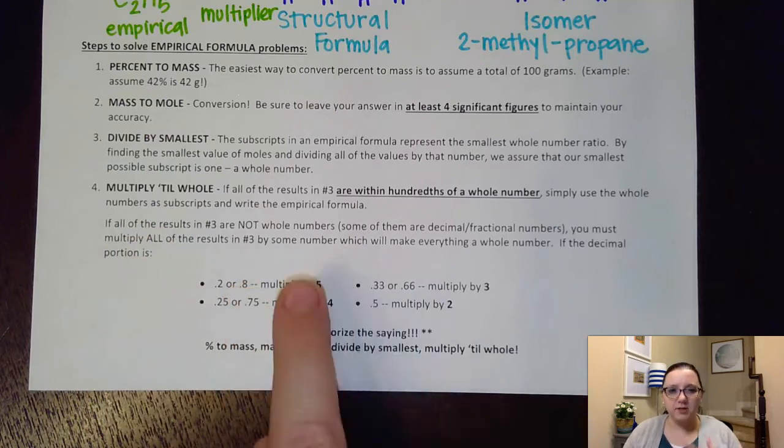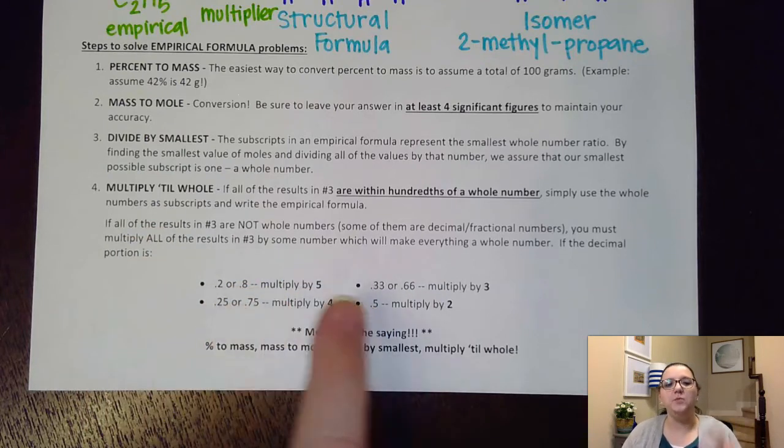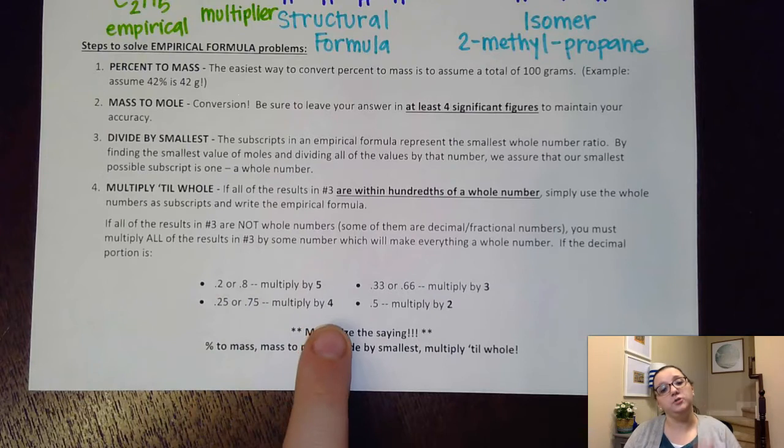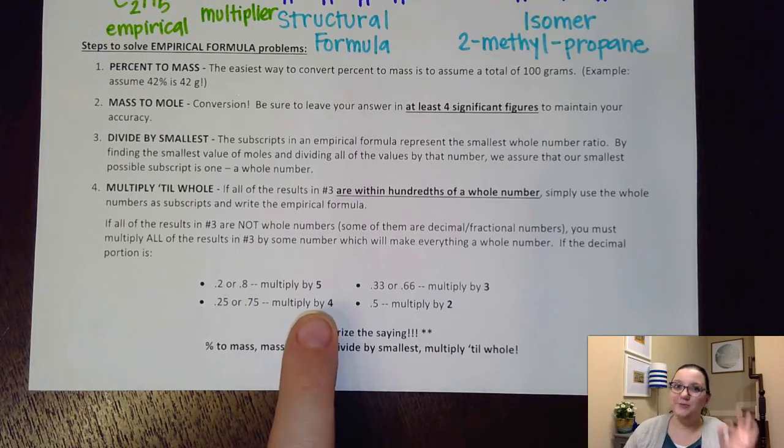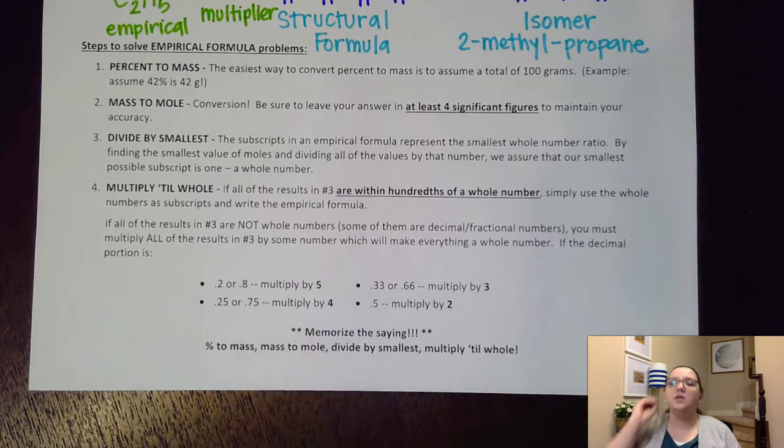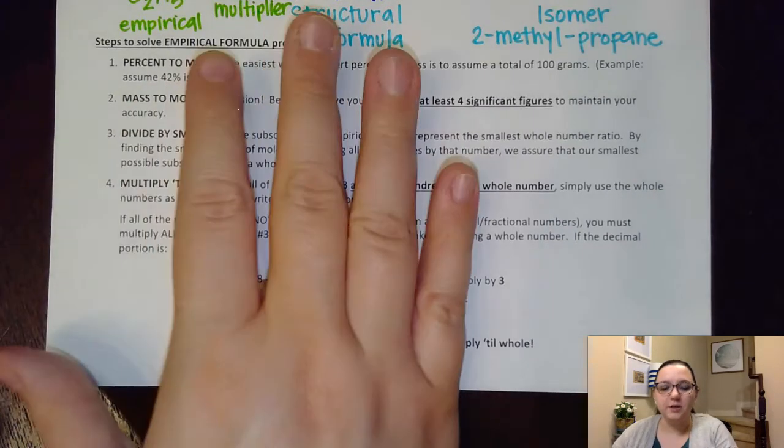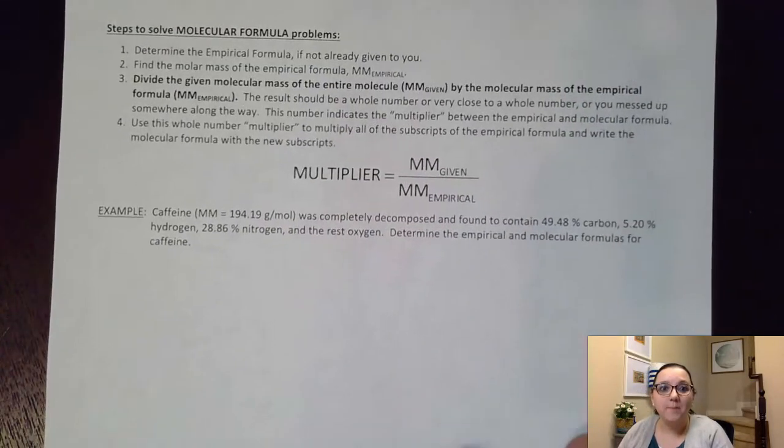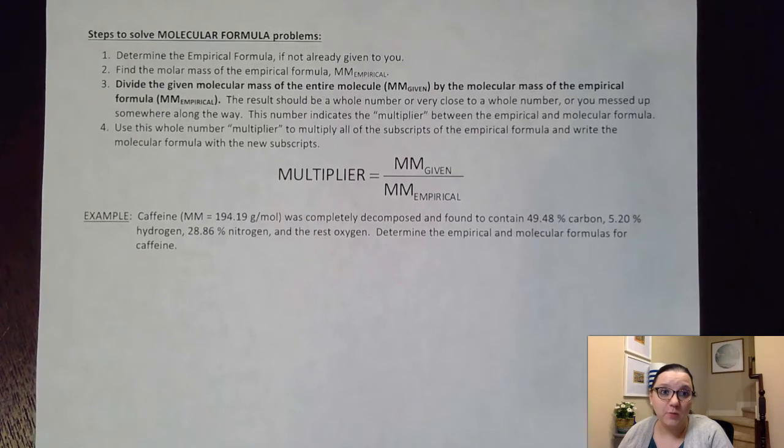So if we have some fractions that we're familiar with, we can multiply by numbers to undo that fraction. What we have to be careful on is that what we do to one subscript, we've got to do to all of them. So if you do have to do the multiply to whole step, even for just one element, you will have to do it for every single element in there. All right, so let's go ahead and flip to the next page where we're going to talk about actually solving one of these problems.